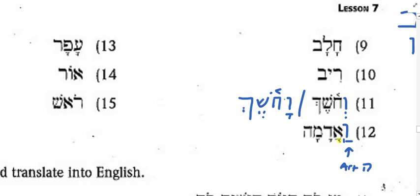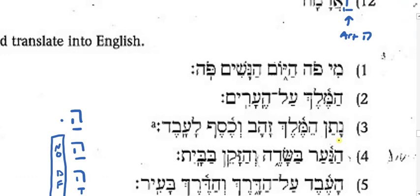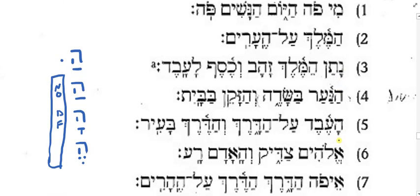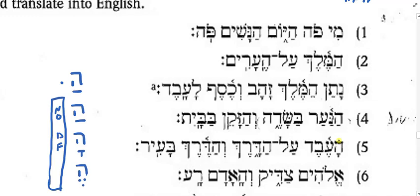Alright, good. Any questions about these last ones? If not, let's go on to the translation exercises. What I've got over here to the left is a reminder of what the article does, because we will see the article used in our homework. The article is normally ha plus a doubling dot — dagesh forte — and if the dagesh forte is rejected it could be ha, ha, or ha. In our translation work, my big concern is that you just be able to recognize the article when you see it and provide an appropriate translation.